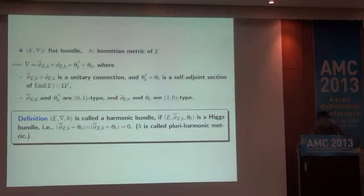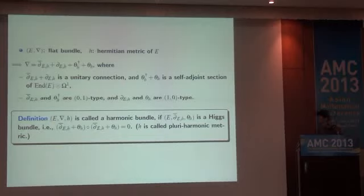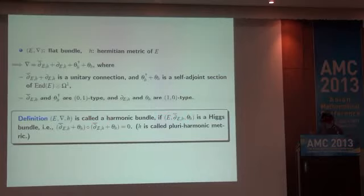We also have the definition of a flat bundle with a pluri-harmonic metric. Suppose we are given a flat bundle with metric; then we have the decomposition of this flat connection into four operators. Here, ∂̄_E plus ∂_E is a unitary connection, and the sum of θ^† and θ is a self-adjoint (1,0)-type section of End(E). These operators decompose into (0,1)-type and (1,0)-type parts. The flat bundle with metric is called a harmonic bundle if the vector bundle E with operators ∂̄_E and θ is a Higgs bundle. These two definitions of harmonic bundle are of course equivalent.